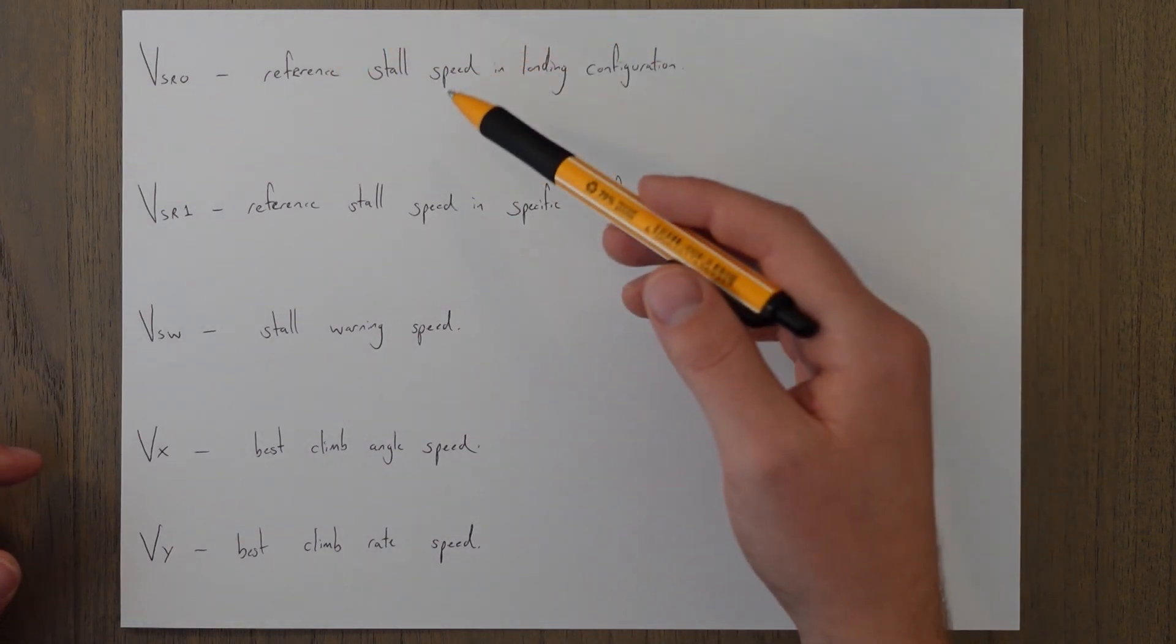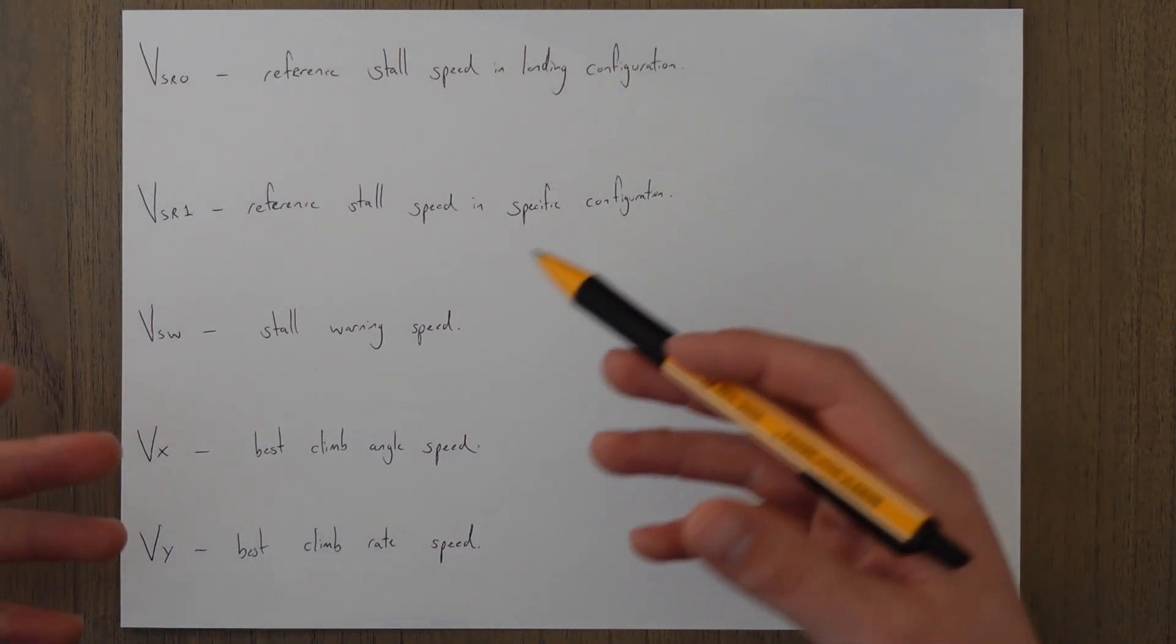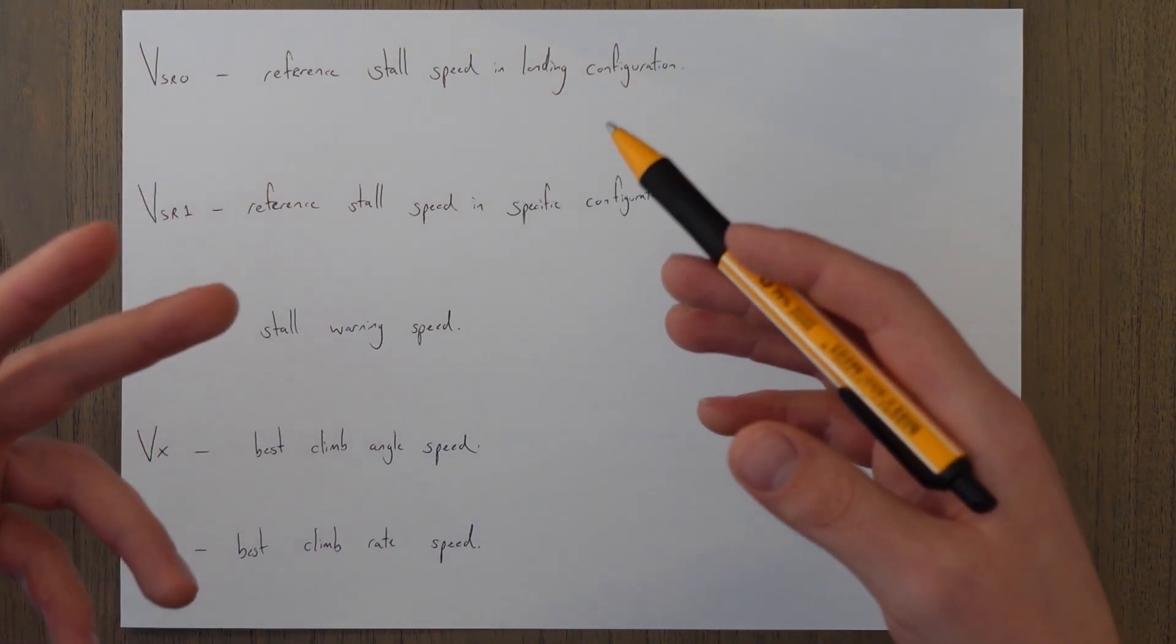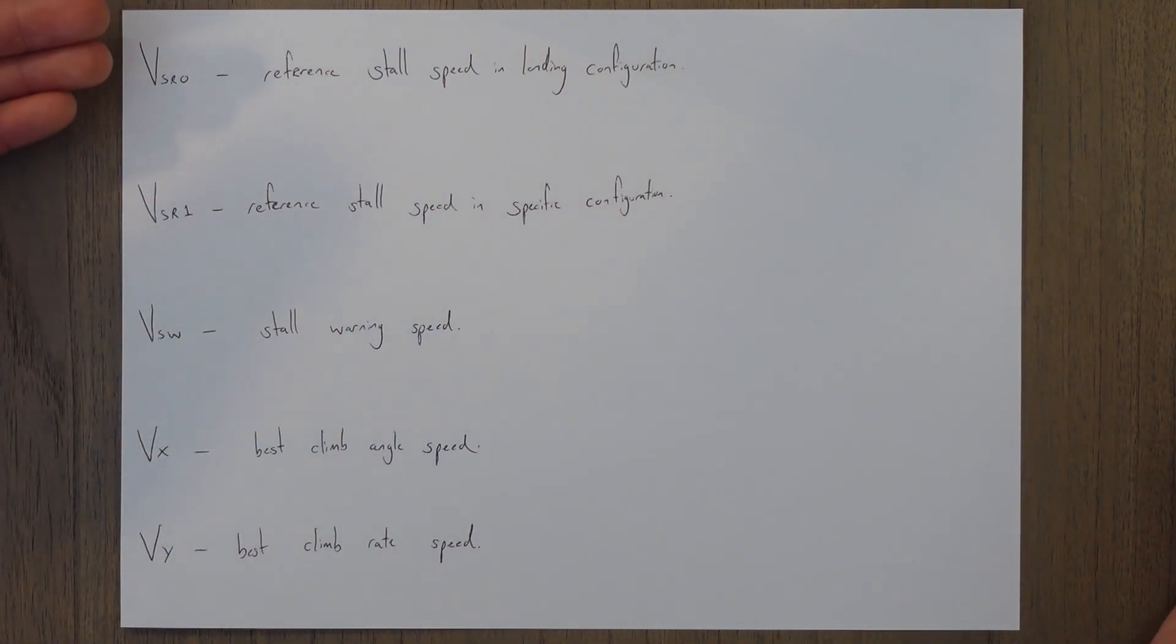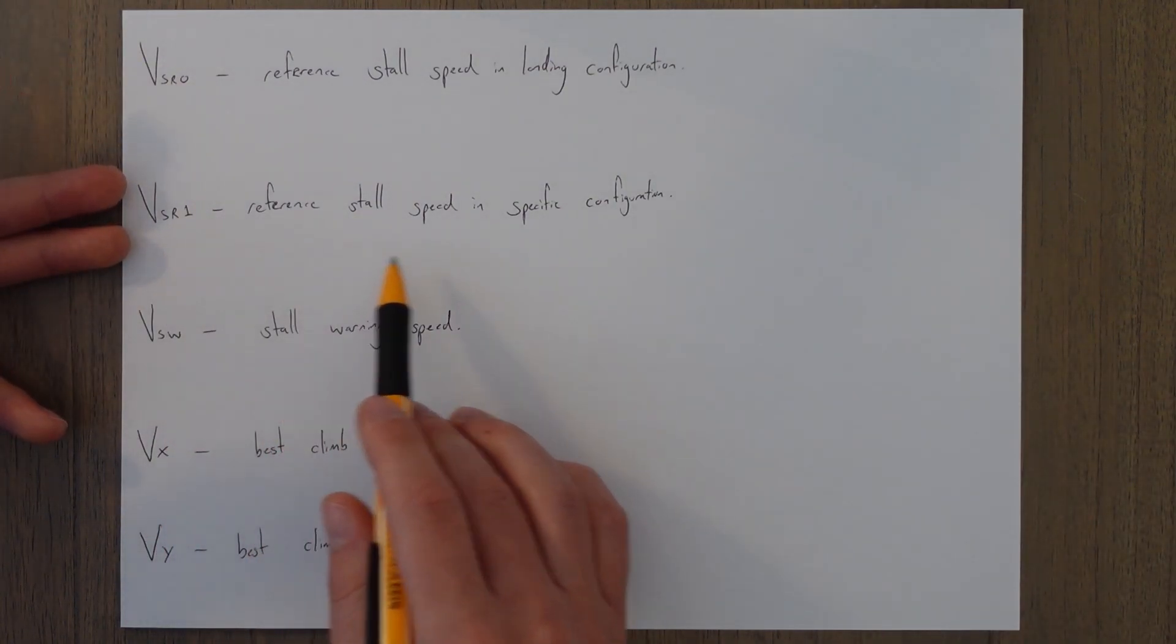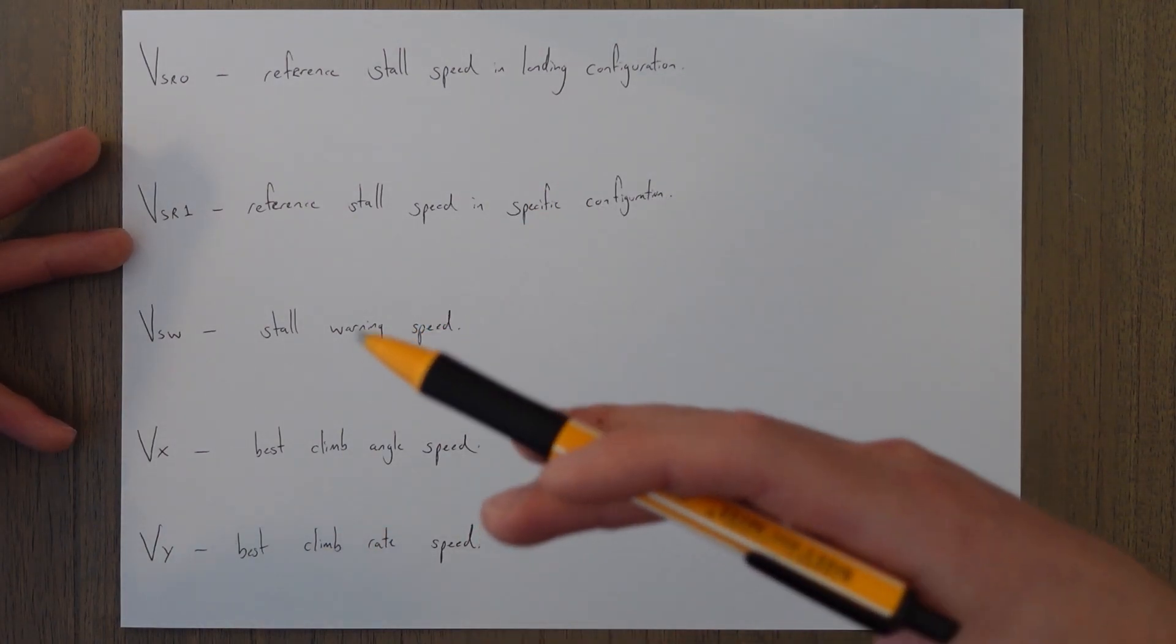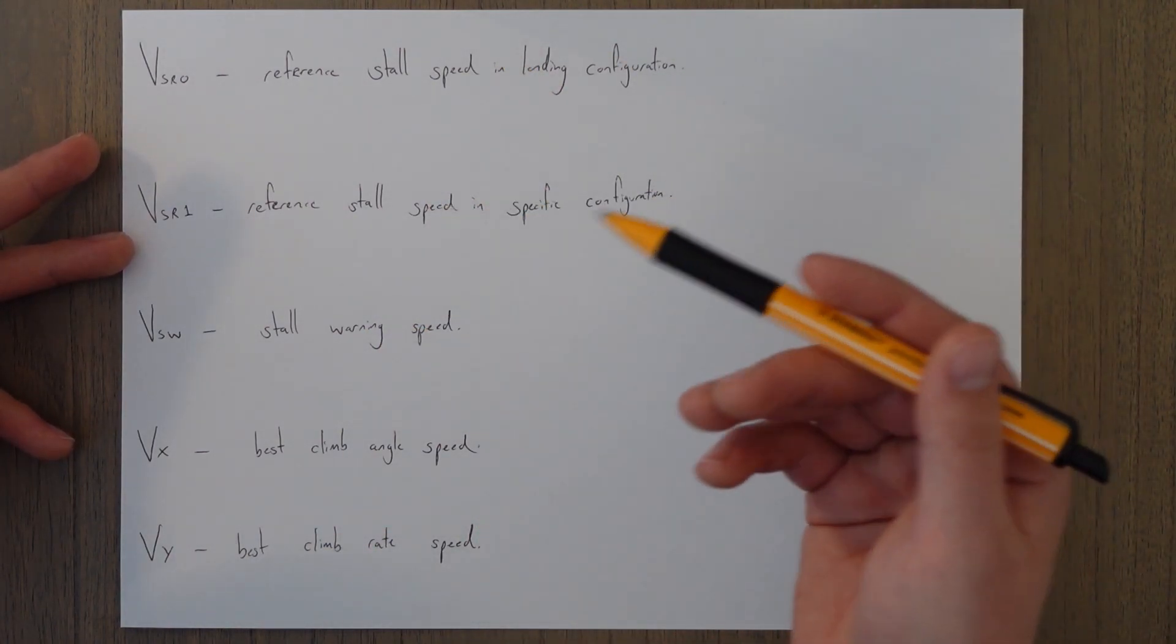VSR0 is the reference stalling speed in the landing configuration. Again, the normal landing configuration stall speed will be derived from this reference speed, and the same for the VSR1 speed, it's just the specific configuration as a reference and then we derive the one that we're actually going to use from this one.